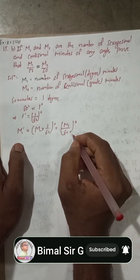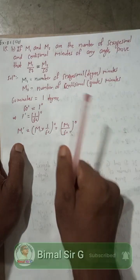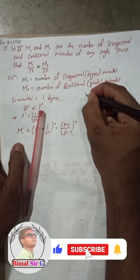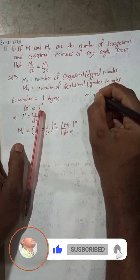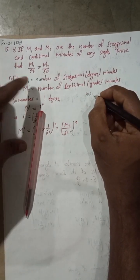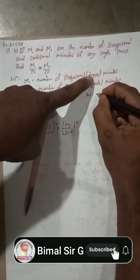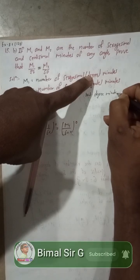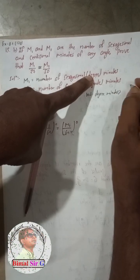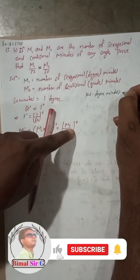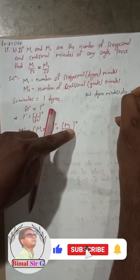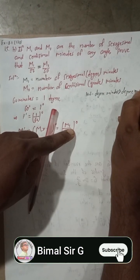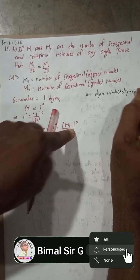I will make a rough conversion roadmap here as a hint. Our path is: degree minutes → convert to degrees, then degrees → convert to grades, then grades → convert to grade minutes. That is our target path.